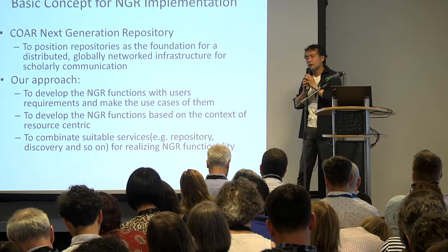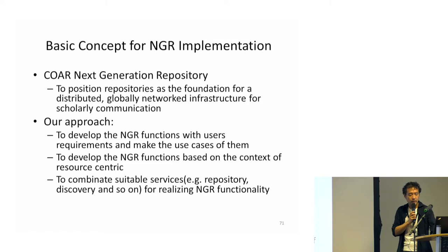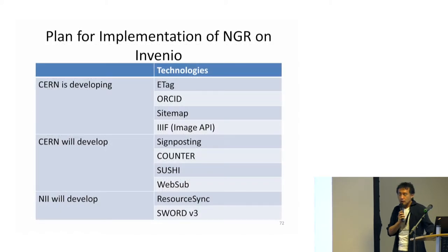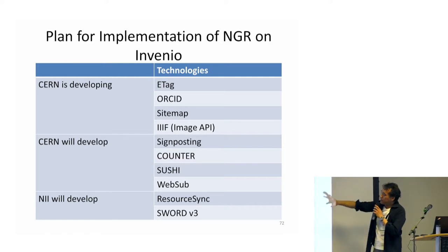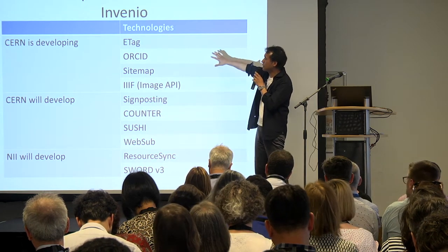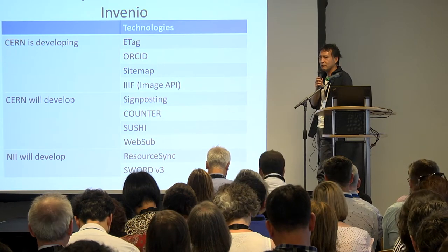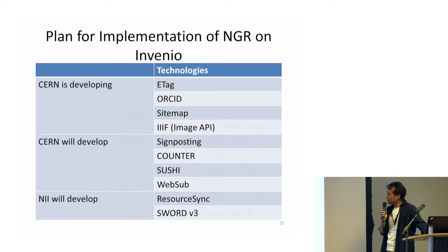We are seeking the use case first and then trying to implement the functionality depending on our use case. In order to implement different types of standards, we are dividing our workload between CELL and NII. Some functionality has already been developed, and we will develop the rest. In these past couple of days we intensively discussed with CELL because there is not much time gap between our two implementations.